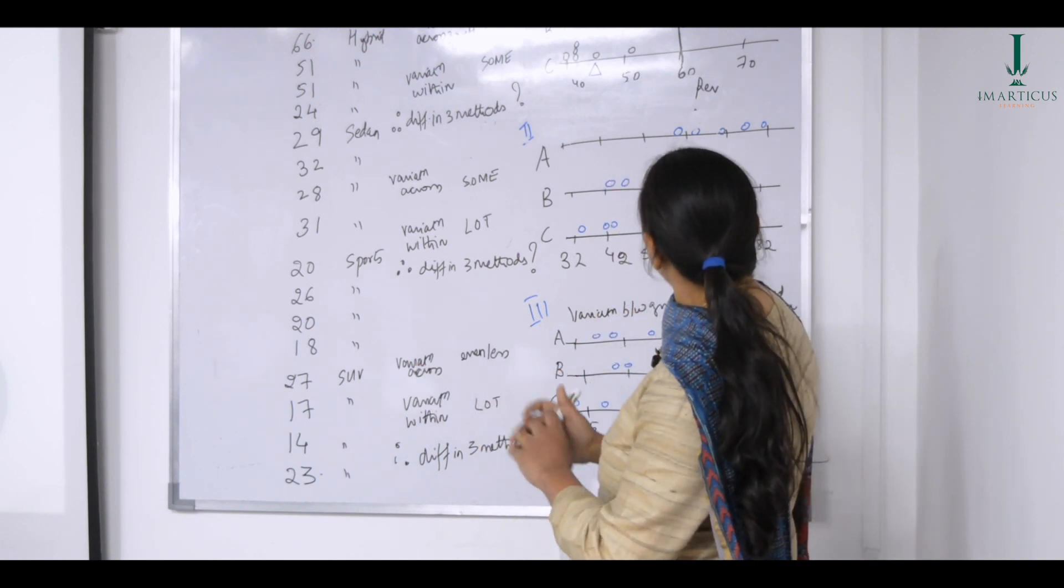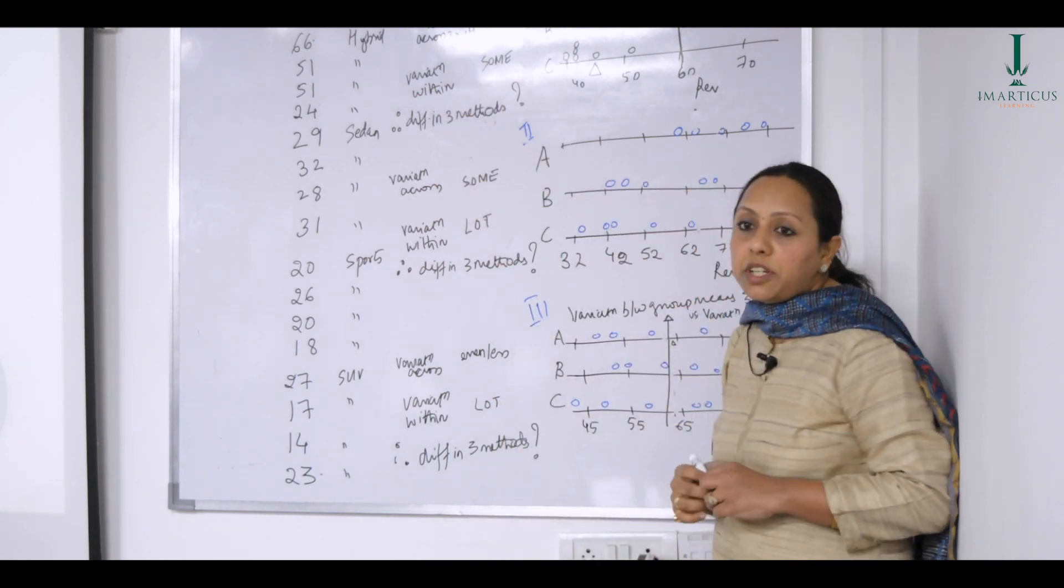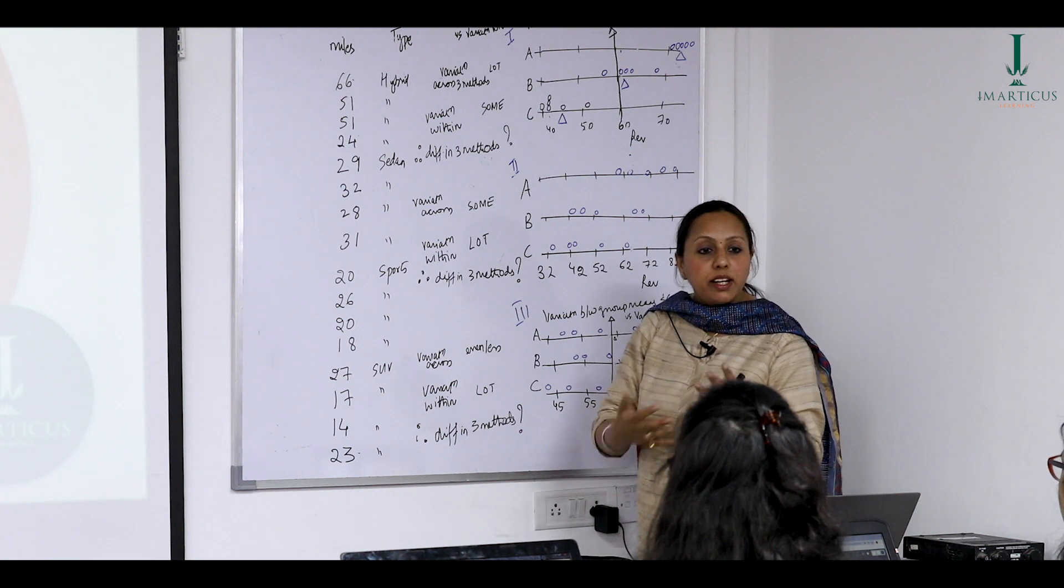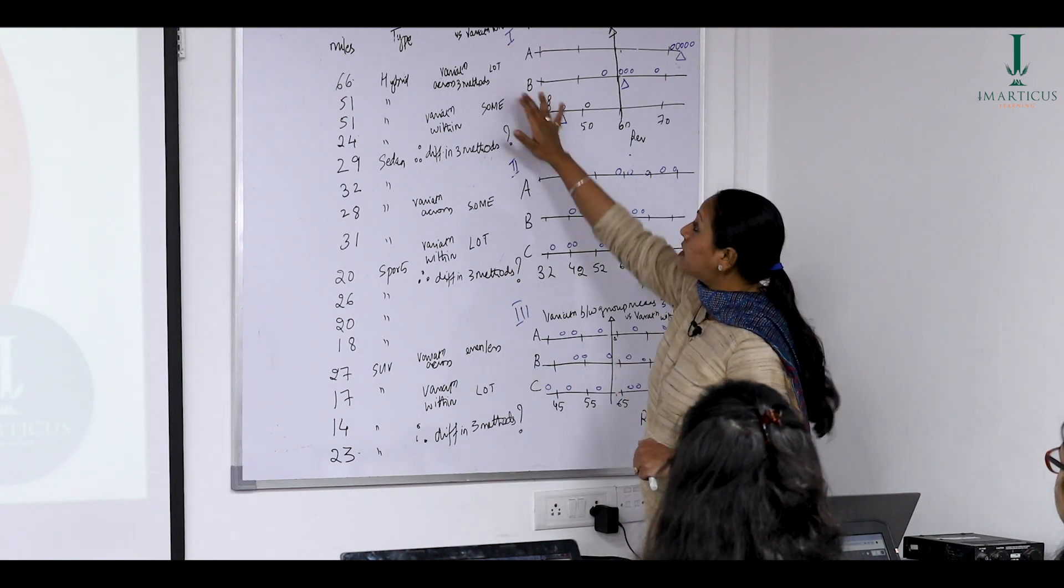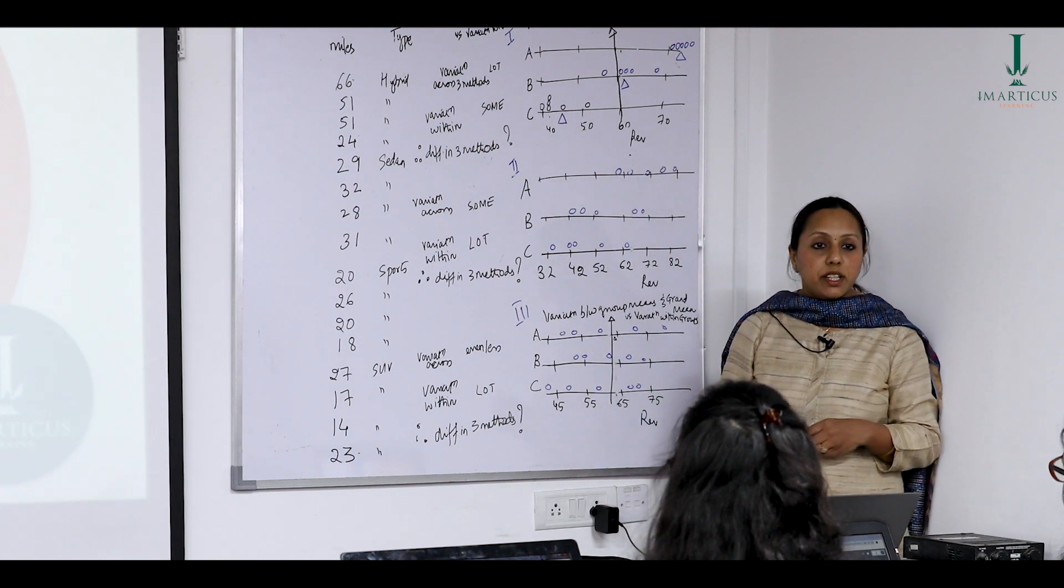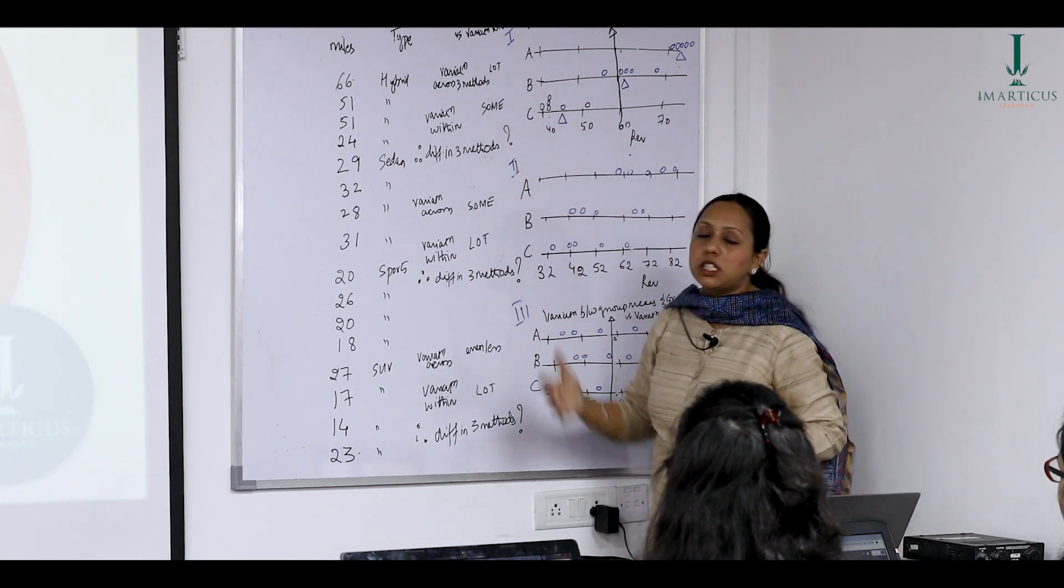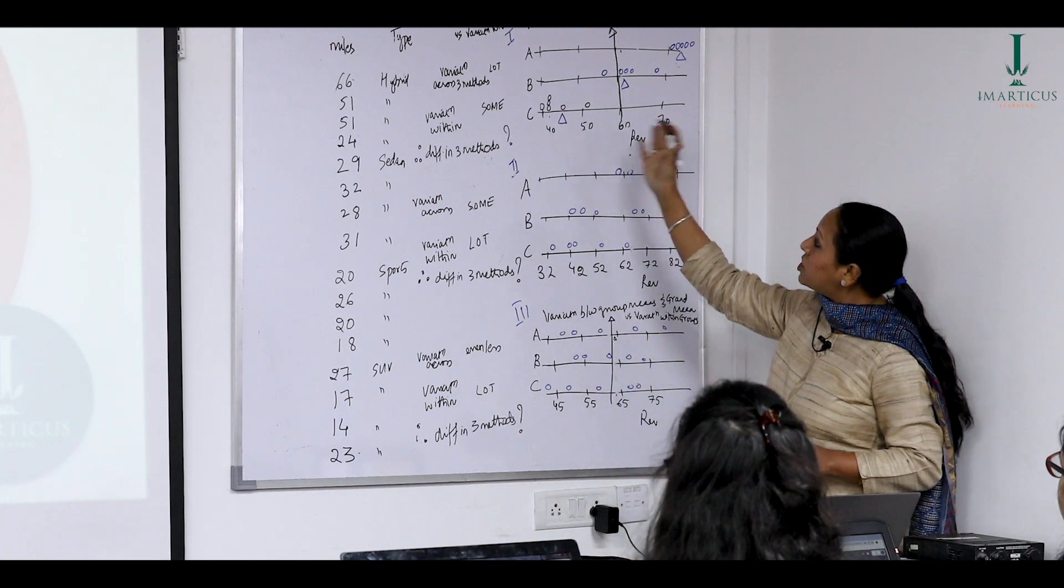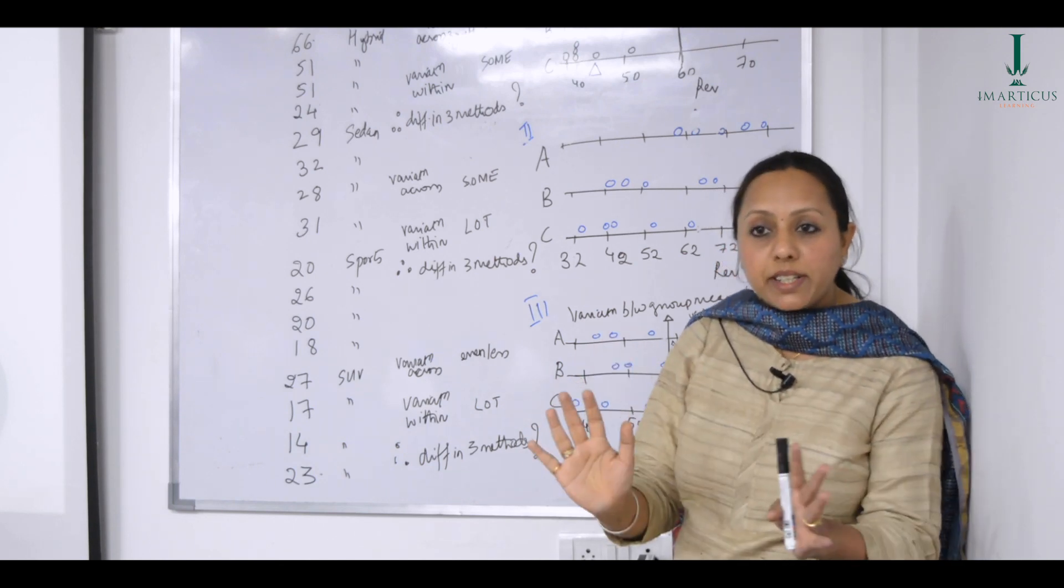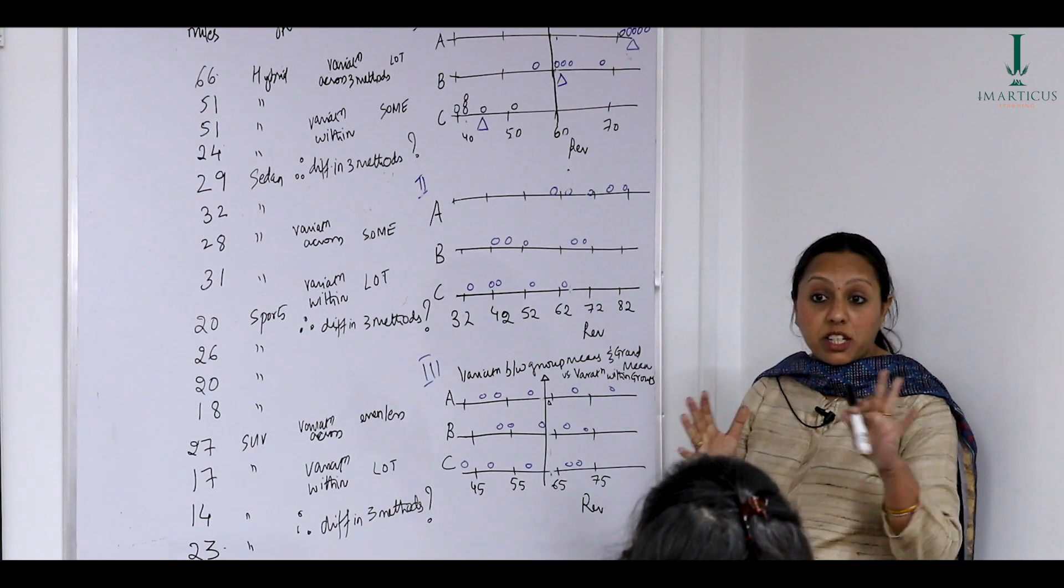So if I asked you, the questions that I want to ask you is, do you see any variation across the three methods for the first one? I've written a variation in the sales figures across the three methods of advertising. You have to put an adjective to it. The adjective that you can choose is lot or sum. Do you see any variation across the three methods? Yes, we have established that. Does everybody agree? Now, is it a lot of variation or is it a tiny variation? Lot, very good, excellent.